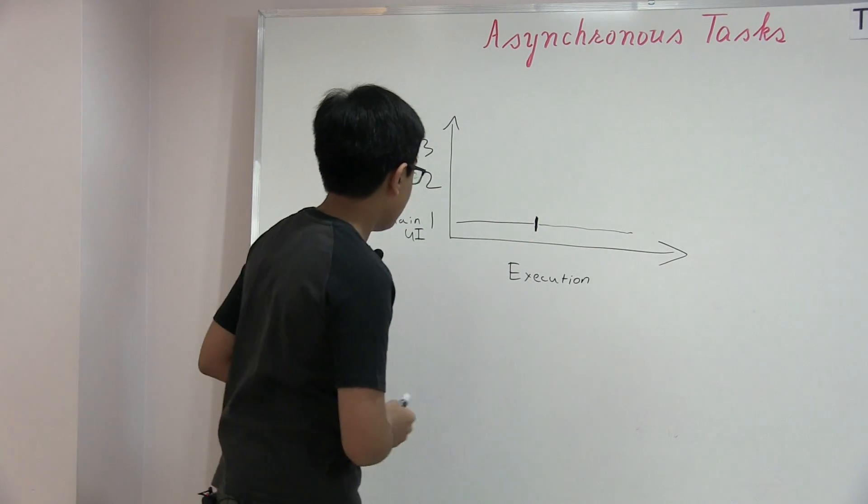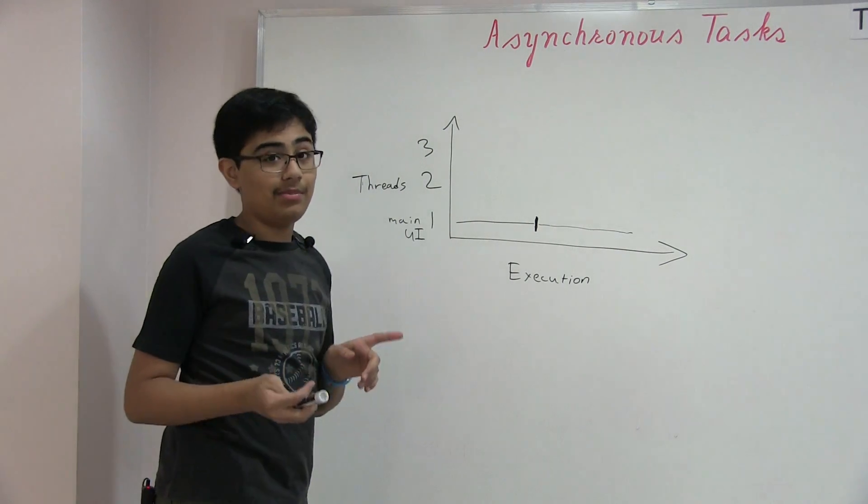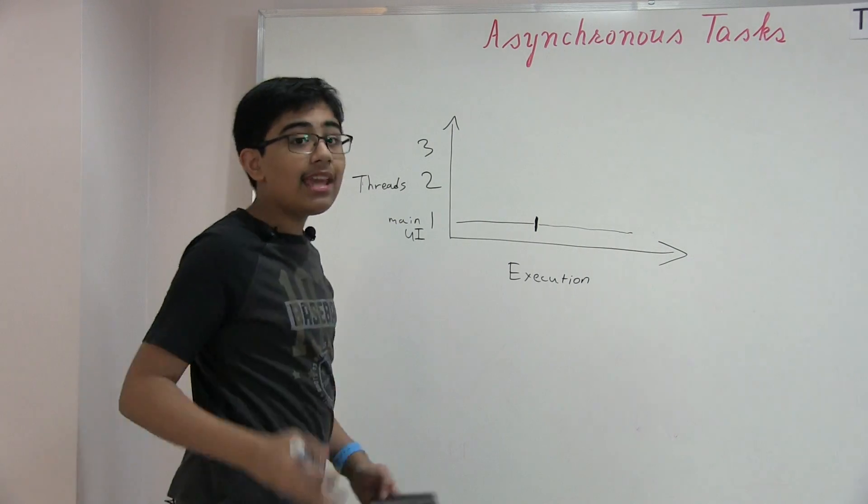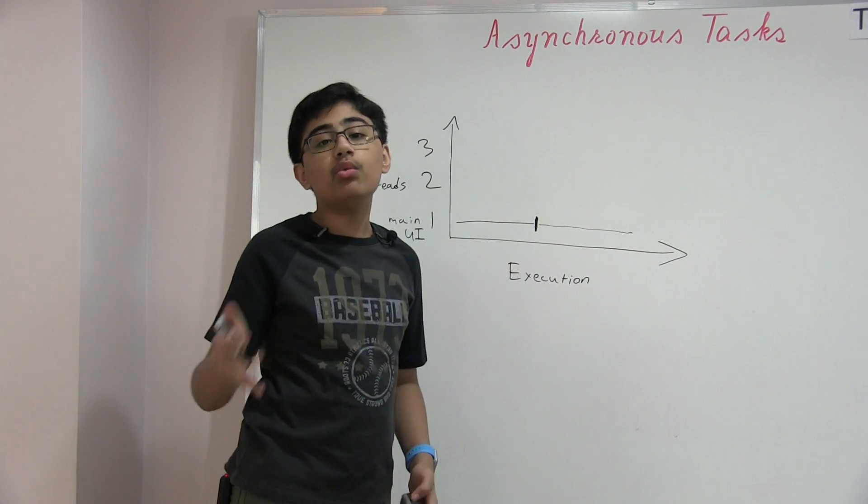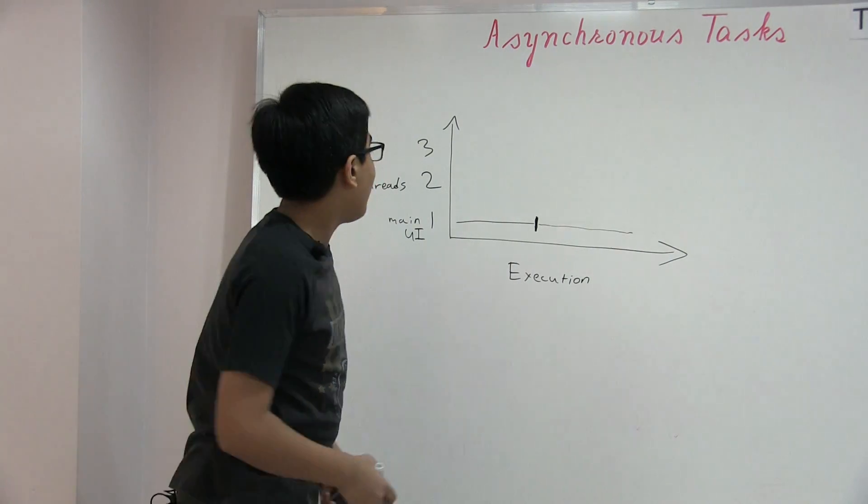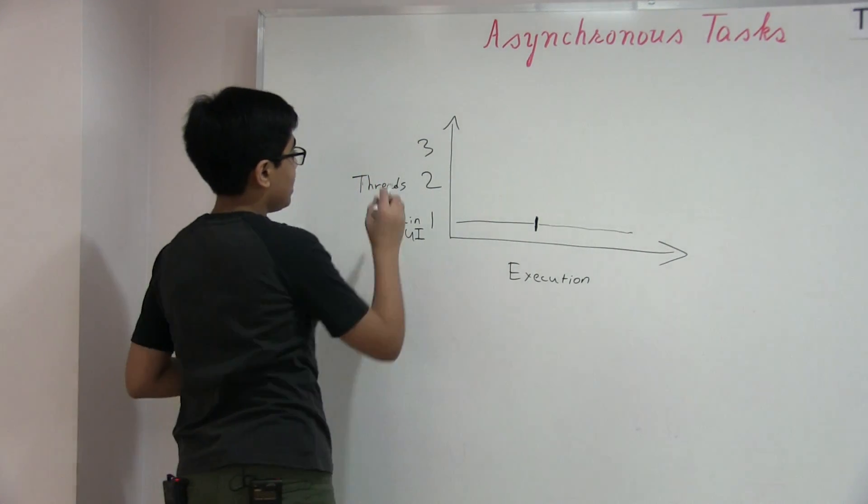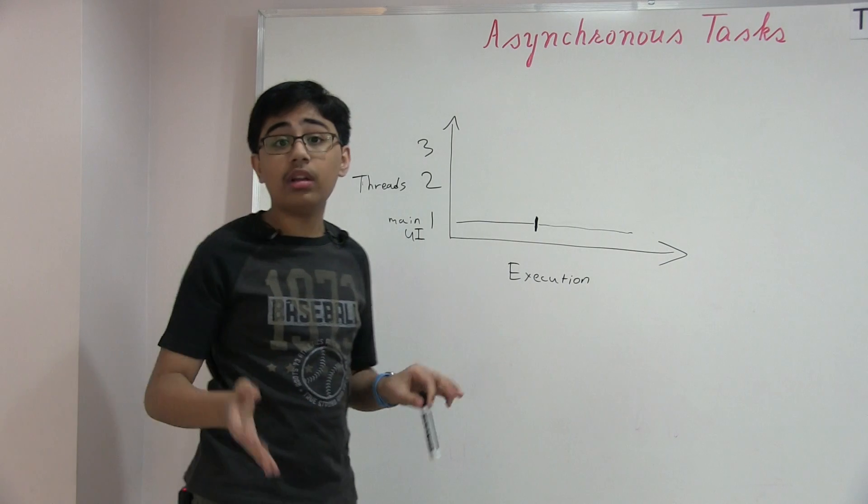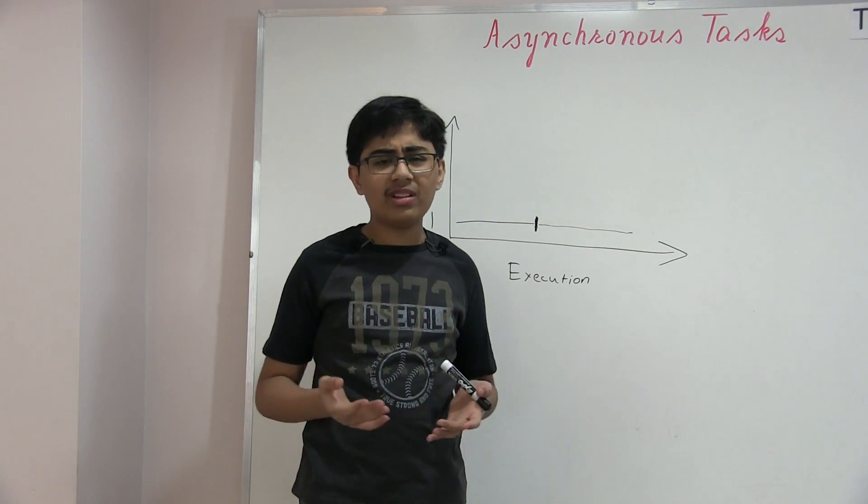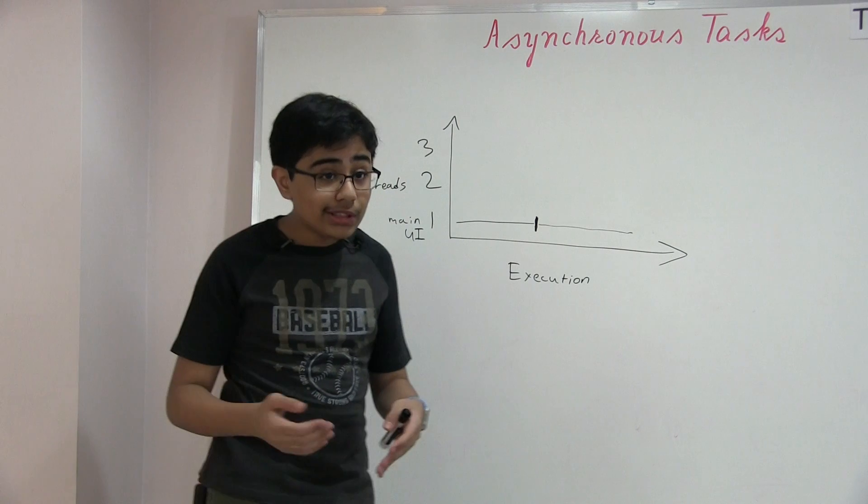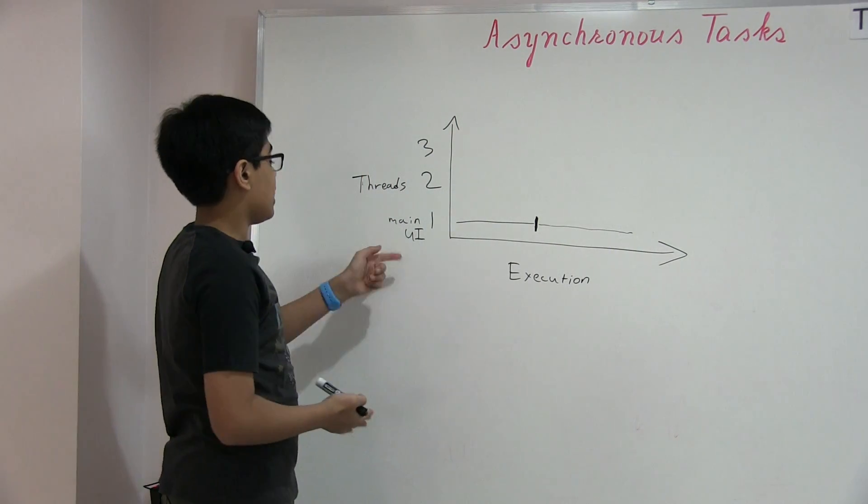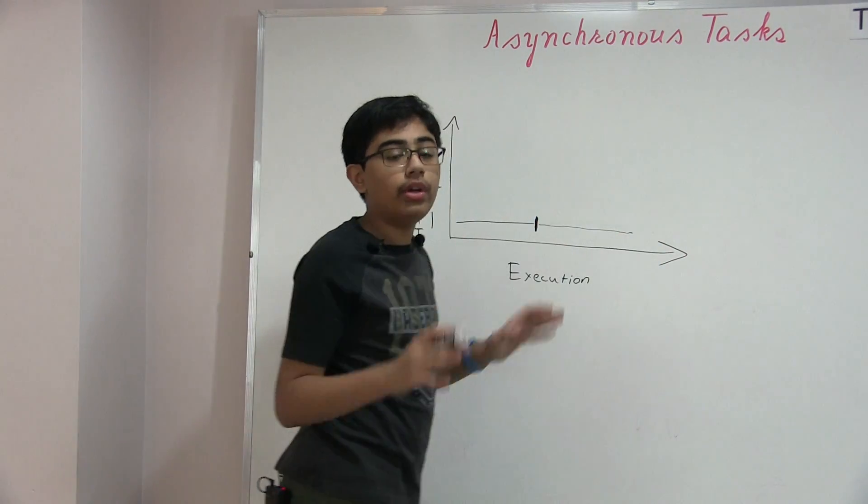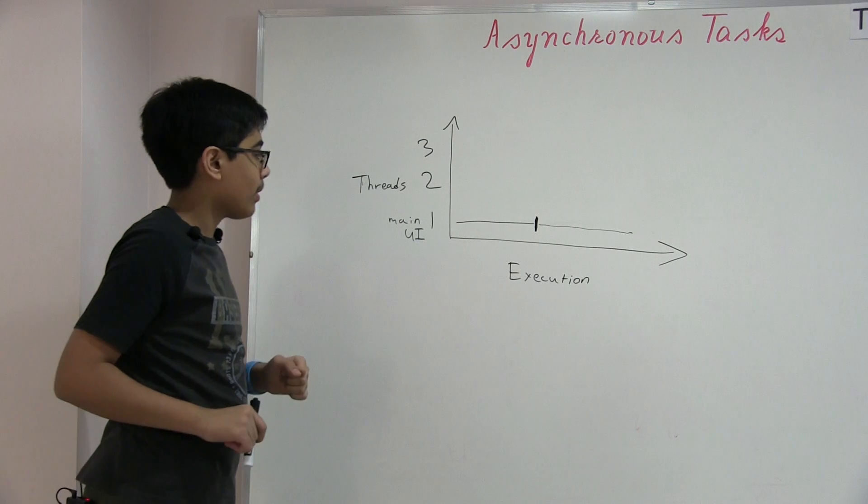You cannot display any animation saying that you're getting a result. Your users might think that the application's frozen and force quit it. If the Internet takes too long to load, it'll just be absolutely frozen. It's just generally not a good user experience. This is where multi-threading comes in. The point of asynchronous tasks is to delegate long-running operations off of the main UI thread and onto a background thread.